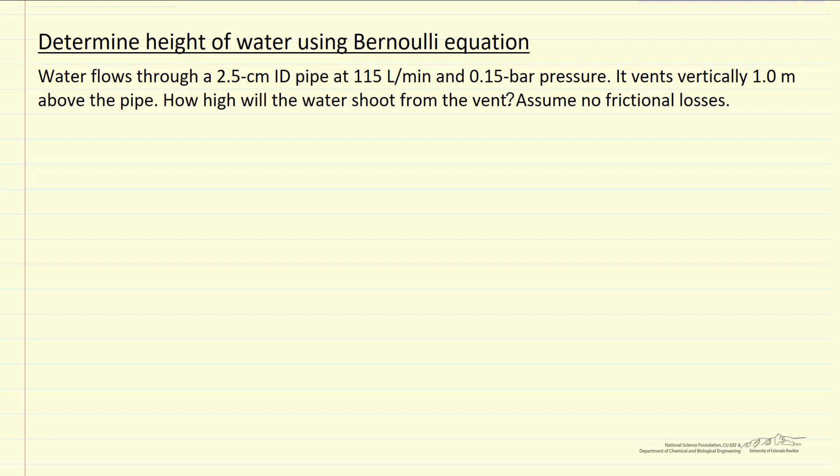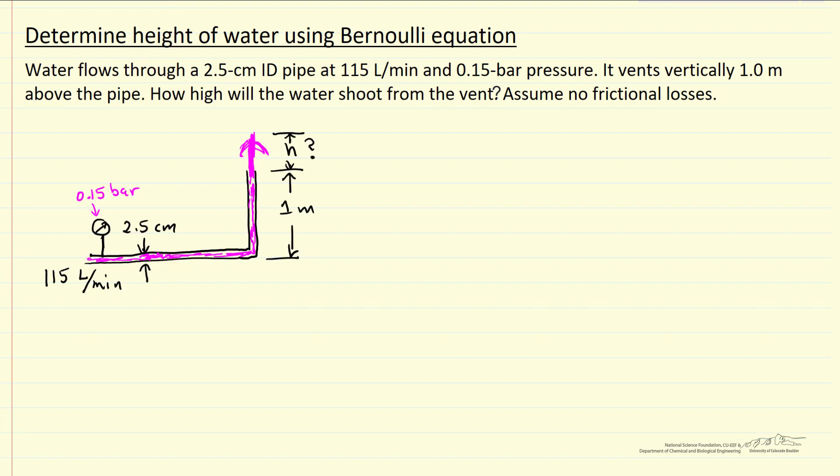So let's draw a diagram of the system that we want to apply to Bernoulli equation. So here's a representation, it's not drawn to scale, and what we're interested in is applying the Bernoulli equation to point one and to point two, and we're going to call this z equals zero, and so here z equals one meter, and here z is one plus h meters.